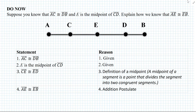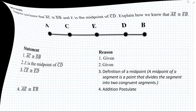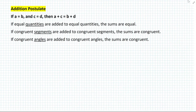So let's first define the addition postulate. The addition postulate has a definition that can be applied to various applications. The first one states that if equal quantities are added to equal quantities, the sums are equal. If congruent segments are added to congruent segments, the sums are equal. And if congruent angles are added to congruent angles, the sums are congruent.